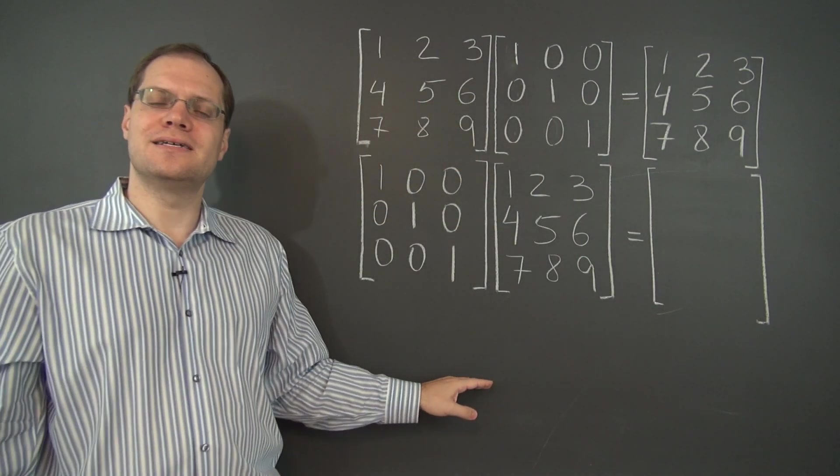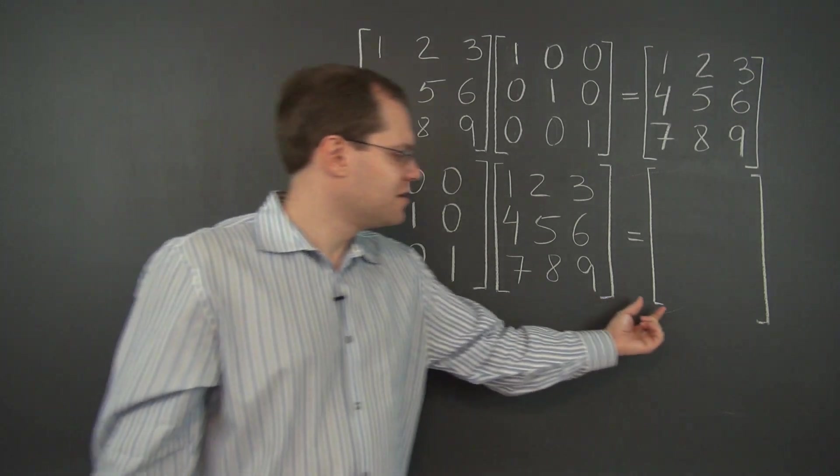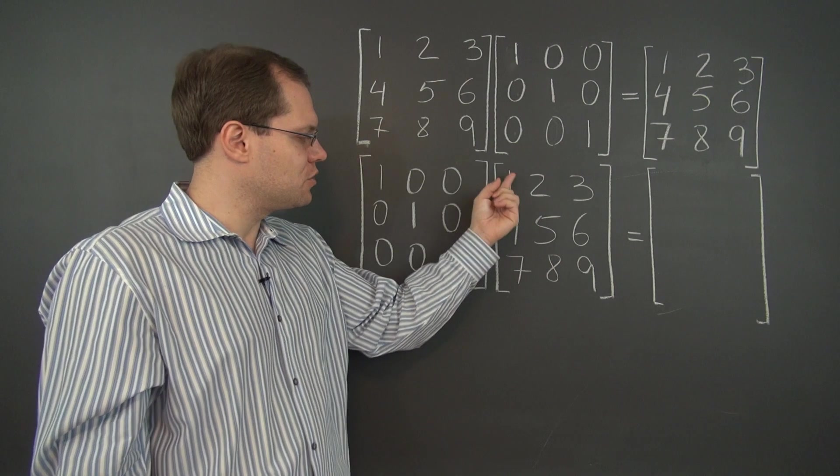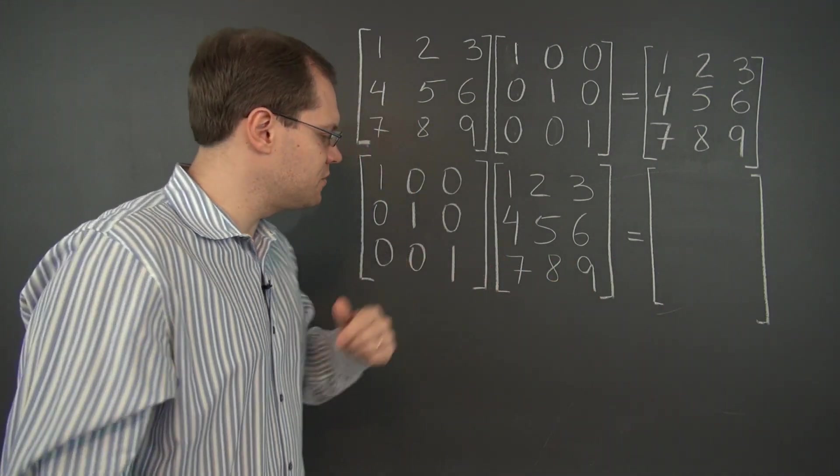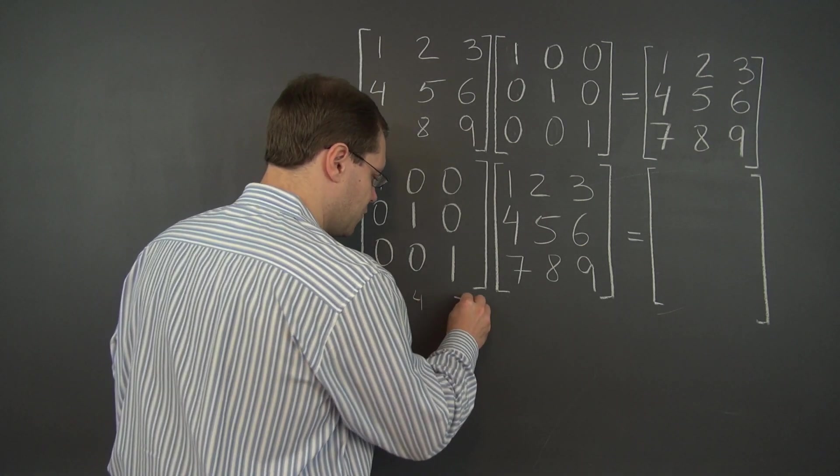First, let's take the column perspective on this product. We're going to have three columns in the answer, linear combinations of these columns with coefficients coming from these columns. So for the first column, let's take the column perspective, then we'll switch to the row perspective, which is much better in this case.